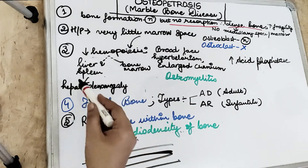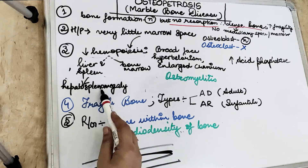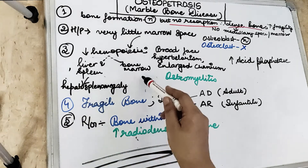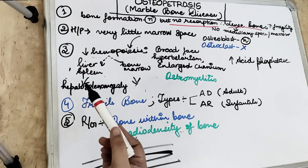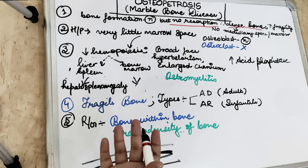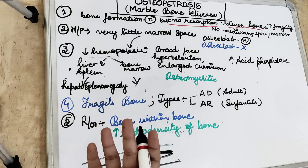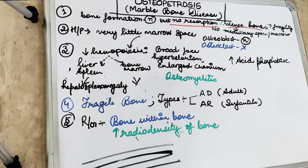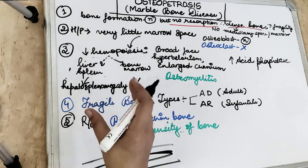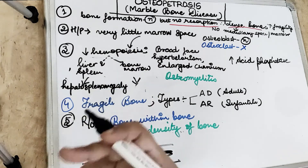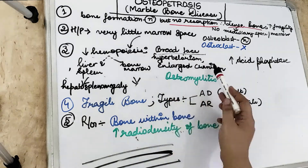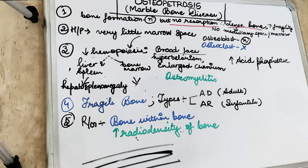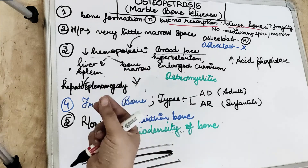Because of decreased hematopoiesis, compensatory blood cell formation occurs in the liver and spleen, which can cause hepatosplenomegaly. Since bone deposition occurs normally at the epiphyseal end but there is no resorption, the bone often appears club-shaped. Decreased hematopoiesis in the bone marrow can lead to anemia.